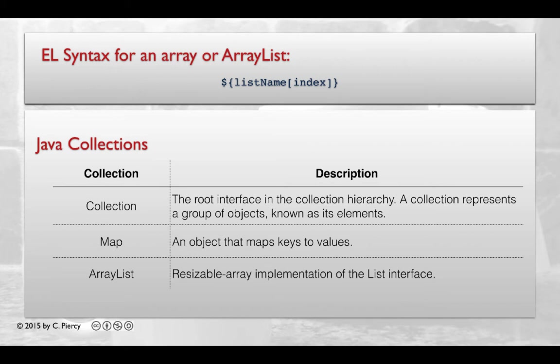Recall, if I use implicit scope, that means that only one array list at any level of scope can have the name listName. Here, we would specify the list name, and then in square brackets, we would provide something to indicate which element of the array list we want to access.